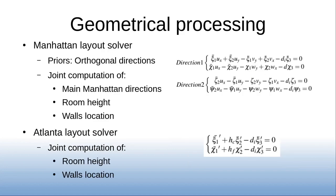Obtaining a first estimation of the wall's direction, we propose two solutions to jointly obtain the whole layout assuming Manhattan or Atlanta world. For Manhattan environments, we cluster and label the walls in the two main directions. Assuming that all the walls share the ceiling and floor height, we extend the DLT-like approach to fit all the walls. For Atlanta environments, since all the walls can have different horizontal directions, we need another approach. Assuming the wall directions are known, we must ensure that the ceiling and floor height are common. For that purpose, we propose a solution building a linear system where the projecting rays are expressed in the local reference system of each wall. From these solutions, we obtain a scalar 3D layout where the camera location, room height, and wall location are computed in meters.